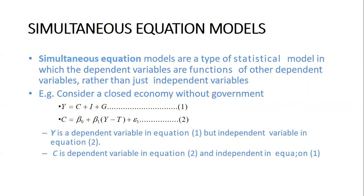Let's start with the simultaneous equation models. Simultaneous equation models are a type of statistical model in which the dependent variables are functions of other dependent variables, rather than just independent variables. Our main focus wouldn't be the definition for simultaneous equations, but if asked what it means to solve two equations simultaneously, it means you are solving two equations at the same time.